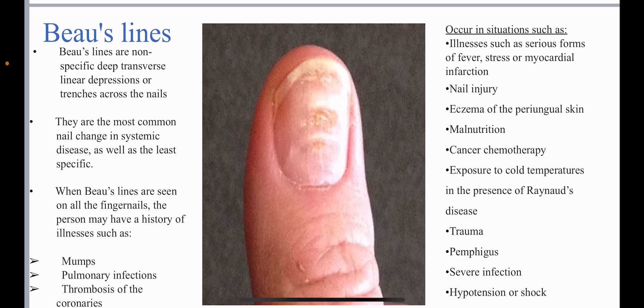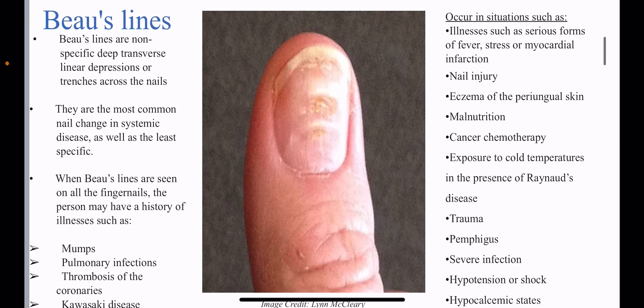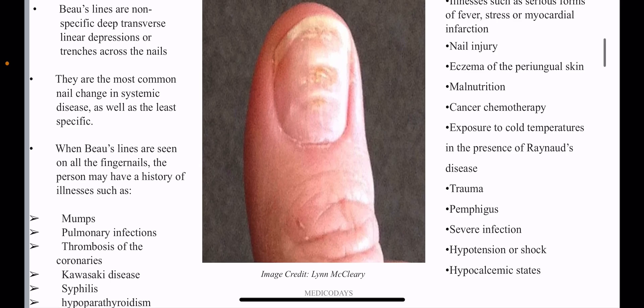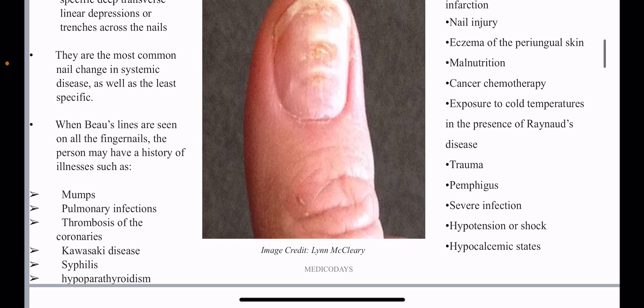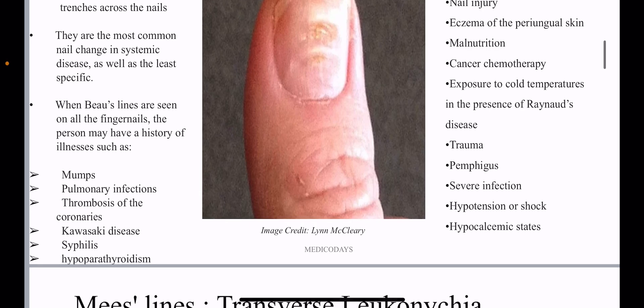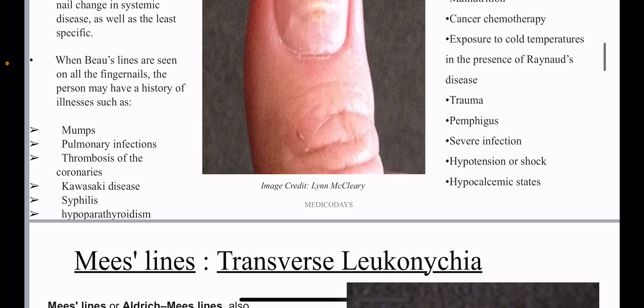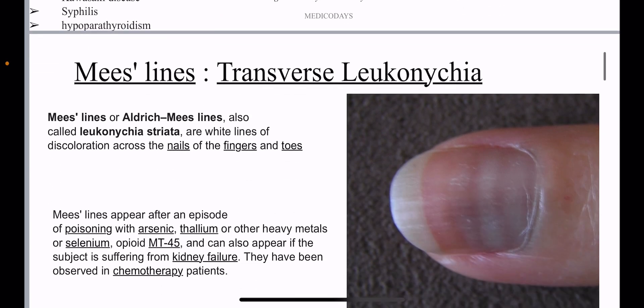Beau's lines are also present in conditions like serious forms of fever, stress, MI, nail injury, eczema, malnutrition, cancer chemotherapy, exposure to cold temperatures, Raynaud's disease, trauma, pemphigus disease, severe infections, hypotension or shock, and hypocalcemic states.